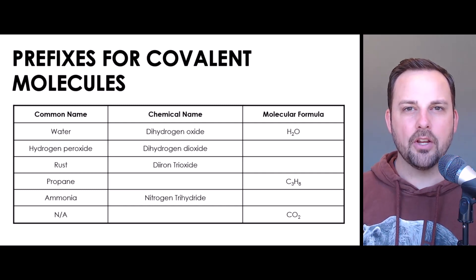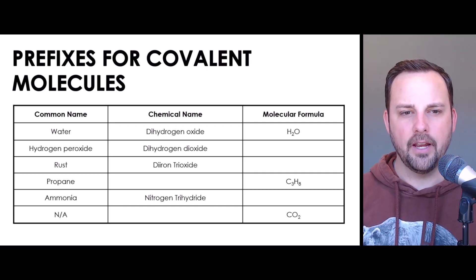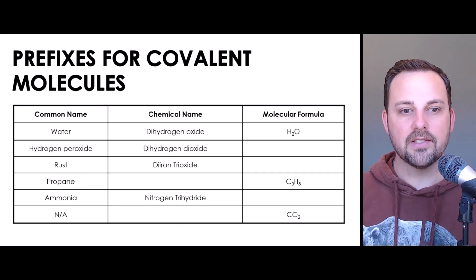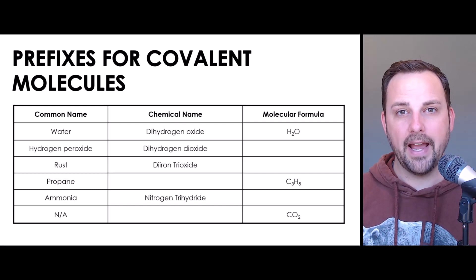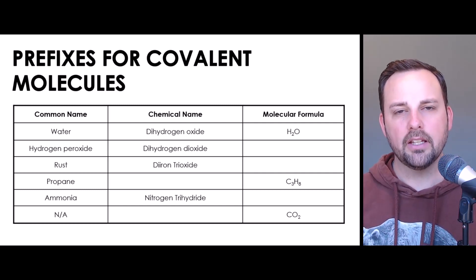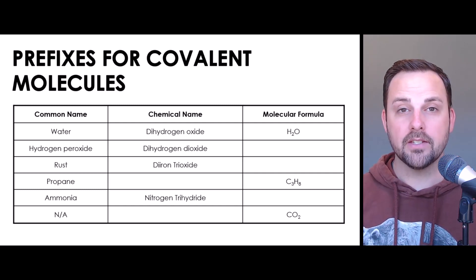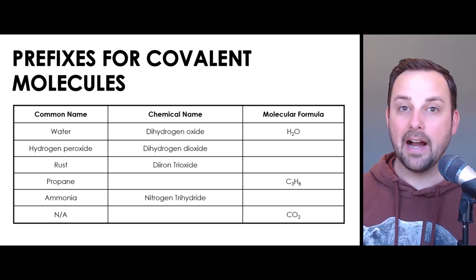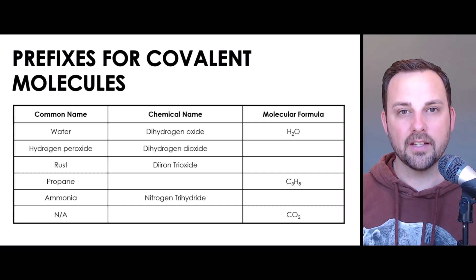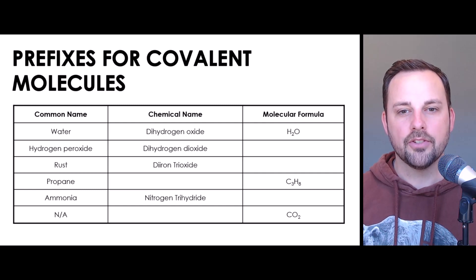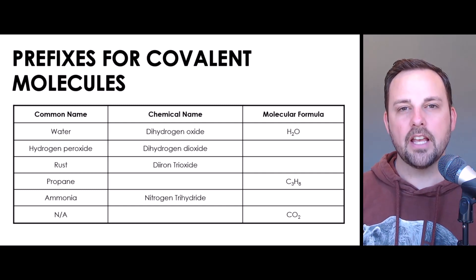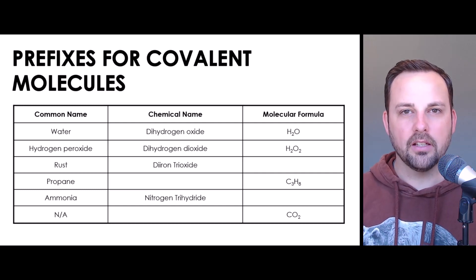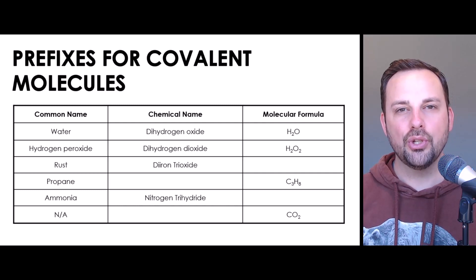Another common covalently bonded molecule you might find around your house is hydrogen peroxide. That is the official chemical name, but another very descriptive chemical name we could give it is dihydrogen dioxide. If you look at that phrase, dihydrogen tells us there are two hydrogen atoms — just like water. And this time the oxide, the oxygen atom, is not by itself; it has the prefix di, meaning two. So hydrogen peroxide, also called dihydrogen dioxide, is very similar to water except it's H2O2, telling us there are two hydrogen atoms and two oxygen atoms.